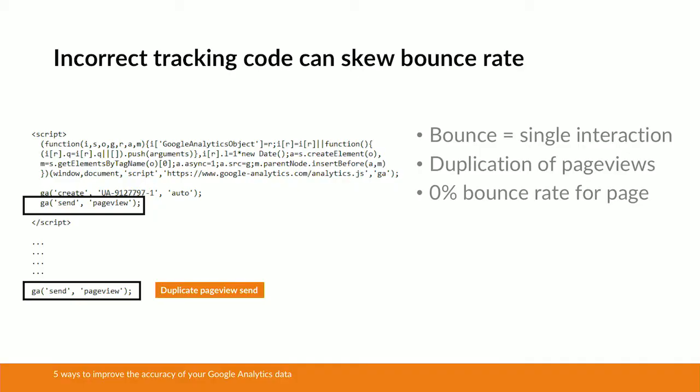You're going to be able to use the website absolutely fine, but in terms of the Google Analytics data, that additional line can cause havoc. Firstly, it's going to duplicate the number of page views that land on this page — so for everybody that lands here, we're going to be double counting the page views. So already that is going to be inaccurate. Not only that, it's also going to have an impact on your bounce rate metric as well.